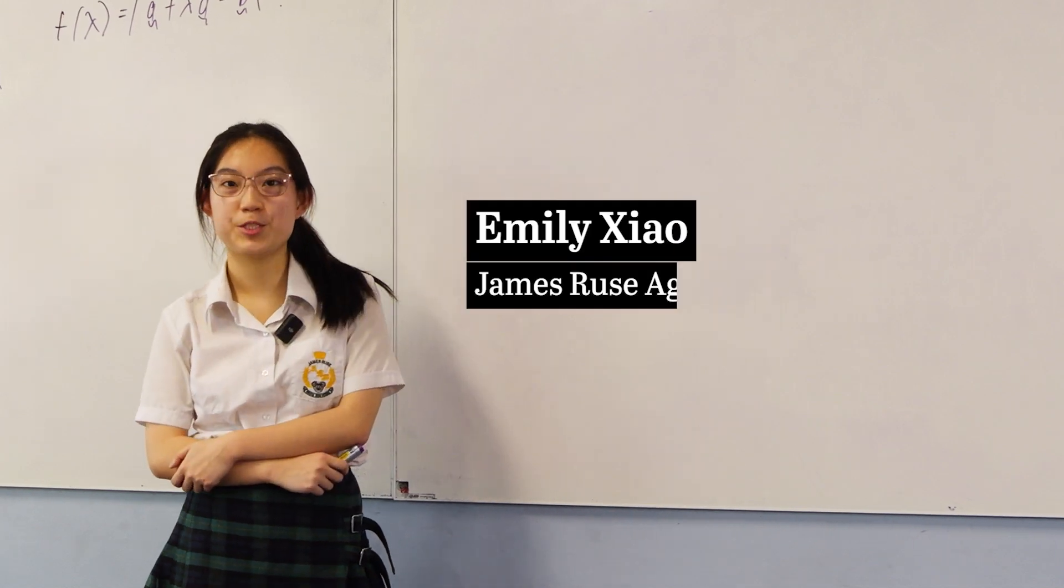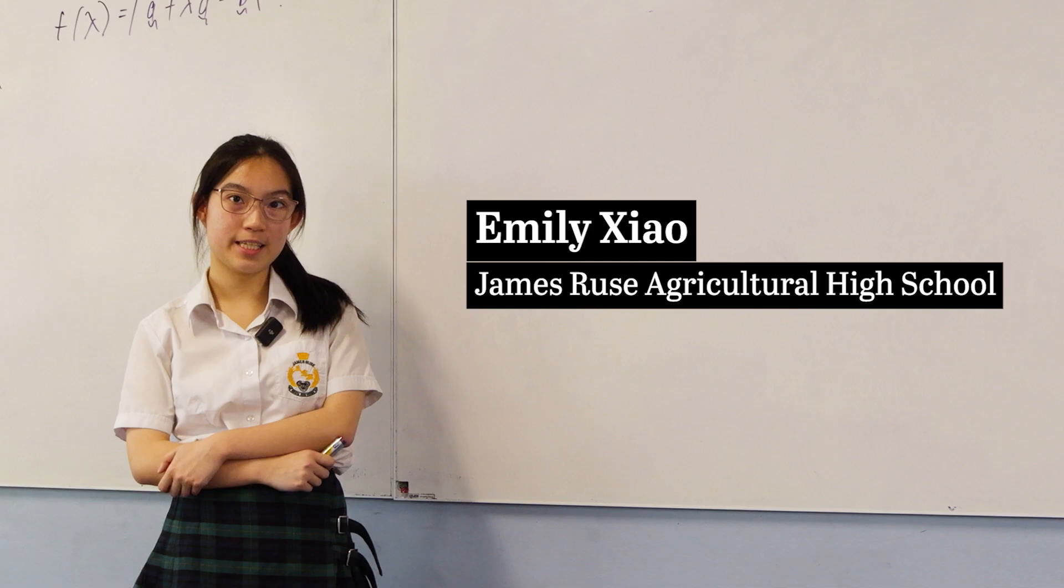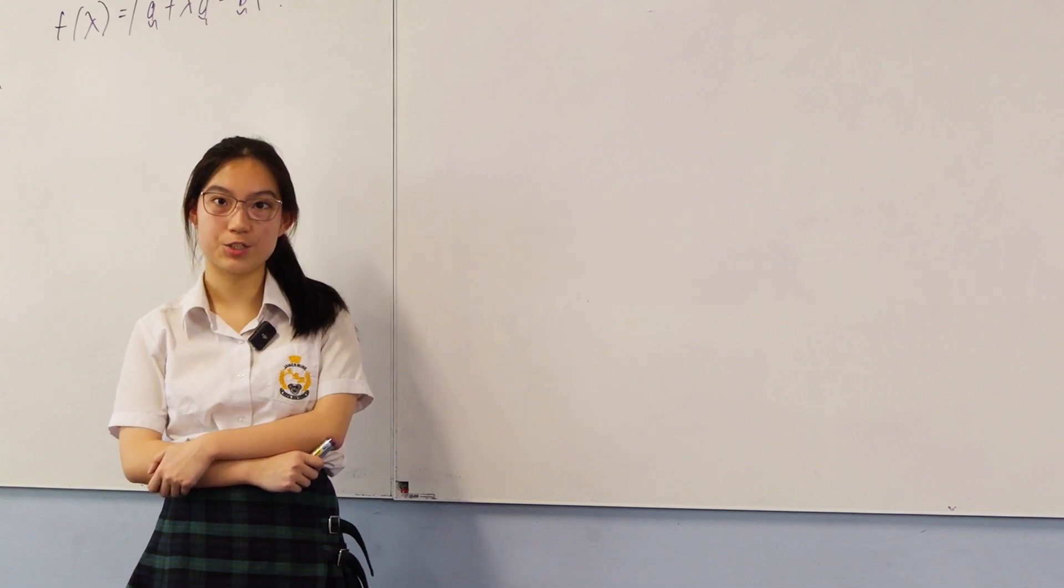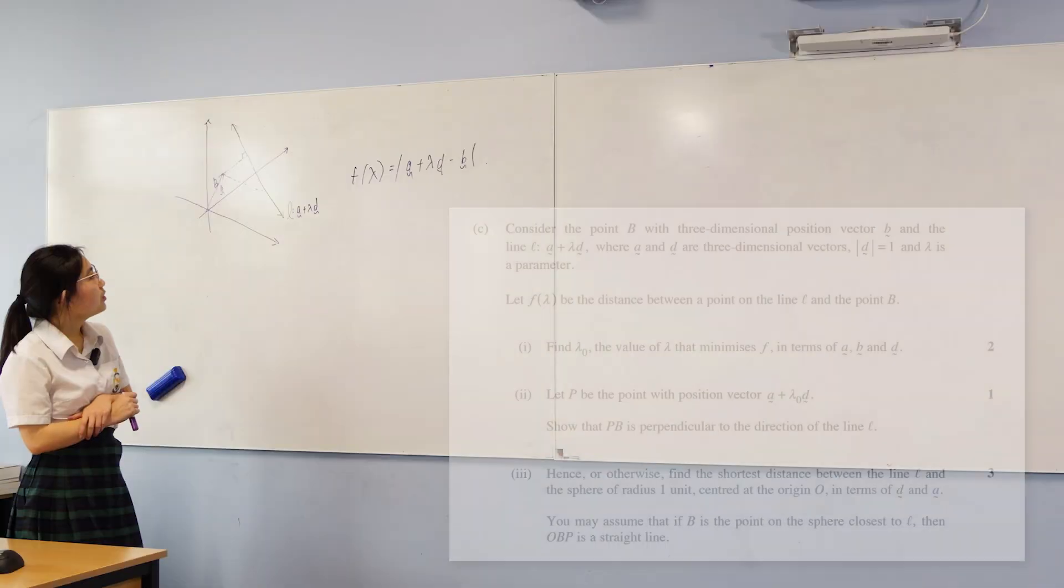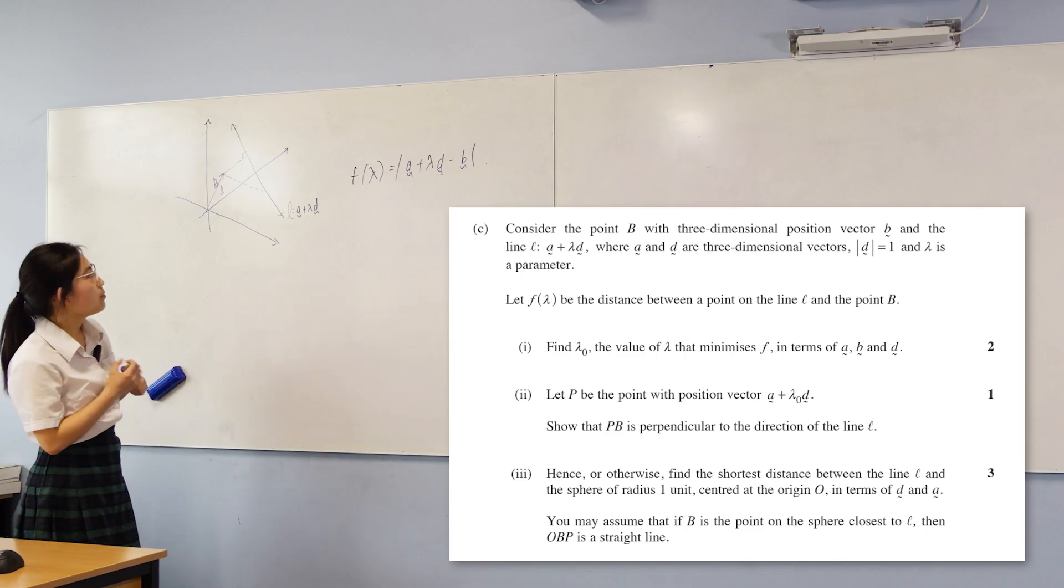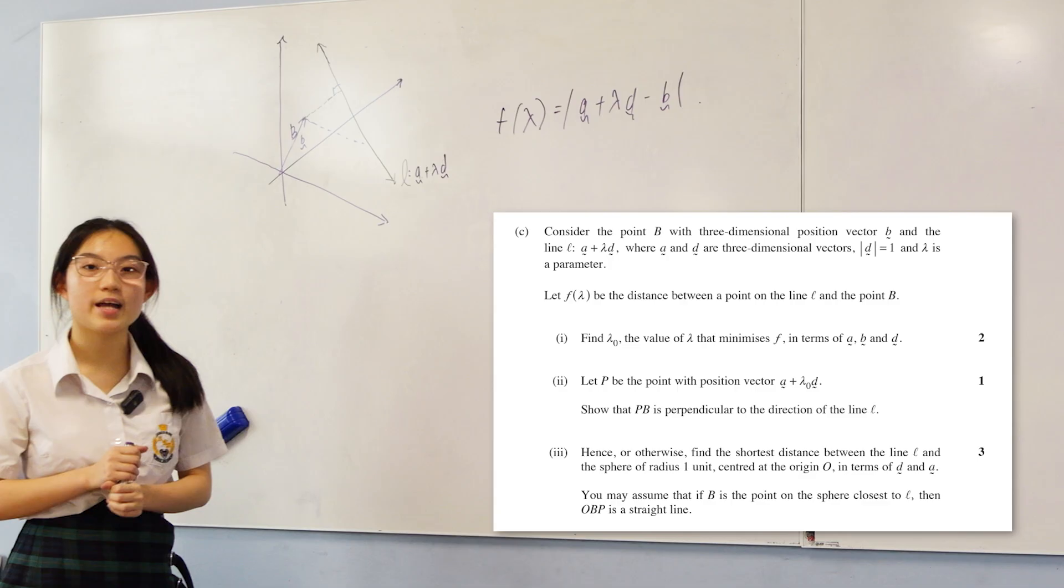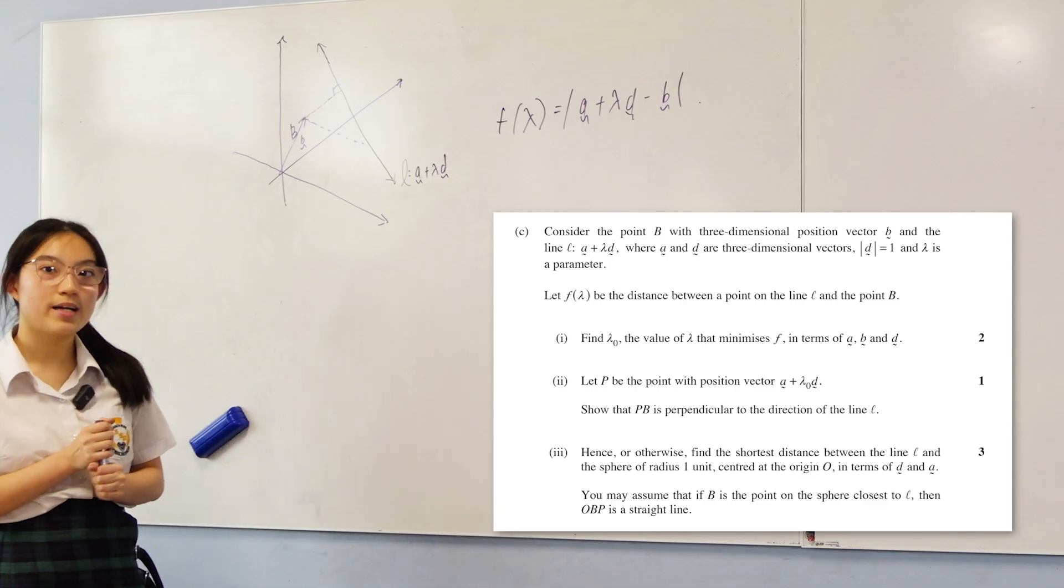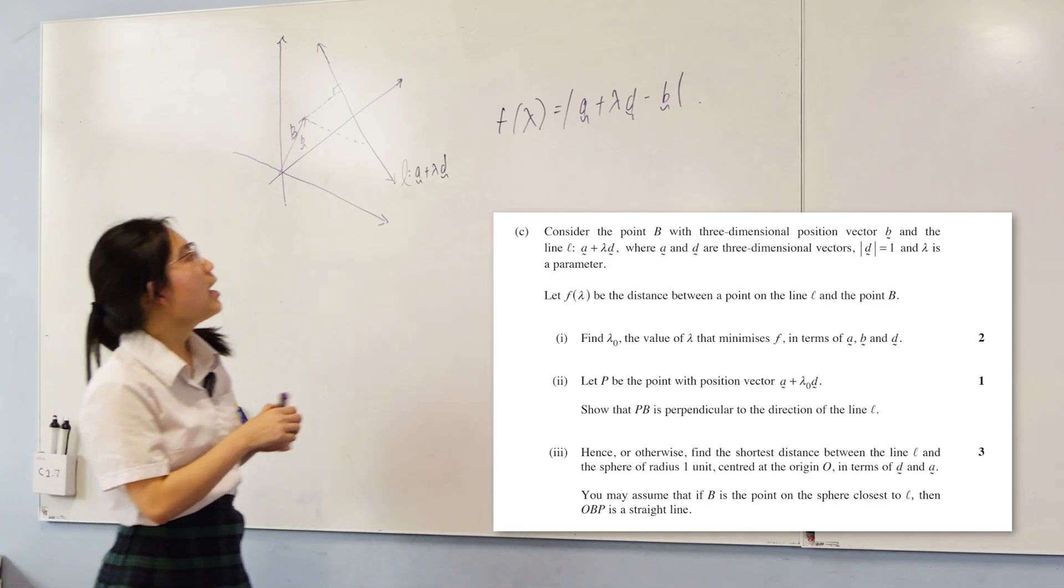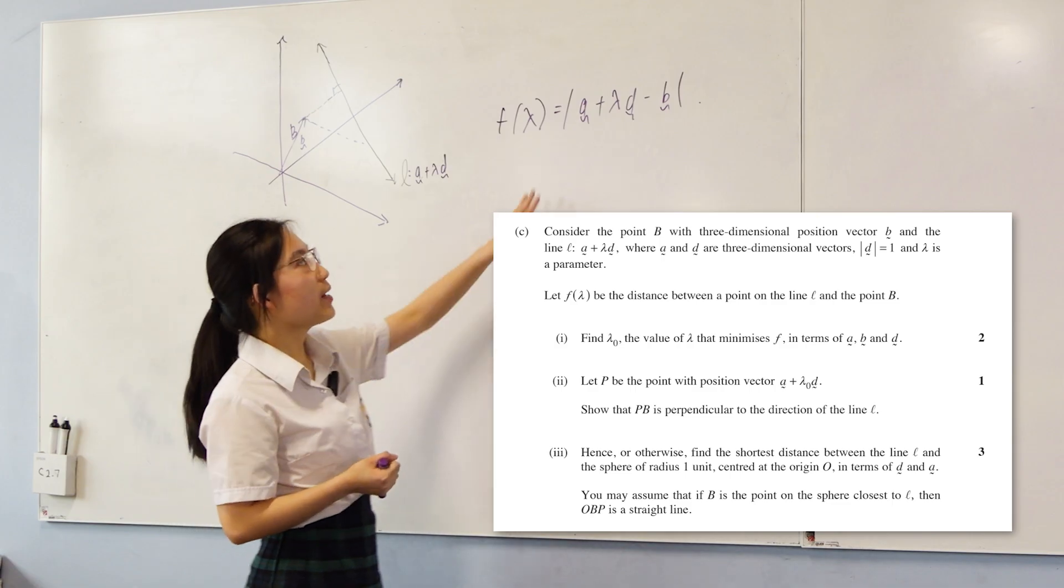Hi guys, I'm Emily, a Year 12 student at James Agricultural High School, and I'm presenting question 16c of the 4-unit Mathematics Extension 2 exam to you here today. This question is asking you to minimize the distance between the point B and the line L. In part 1, they want you to find the value of lambda that minimizes f lambda. f lambda represents the distance between the point and the line, which is given by this expression here.